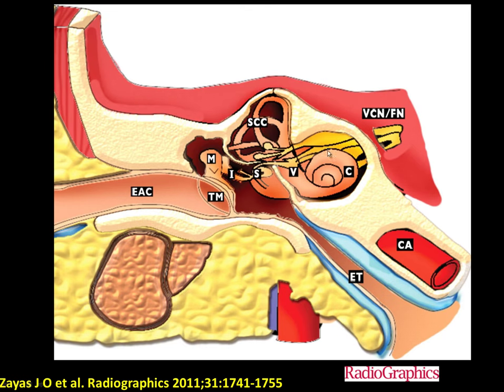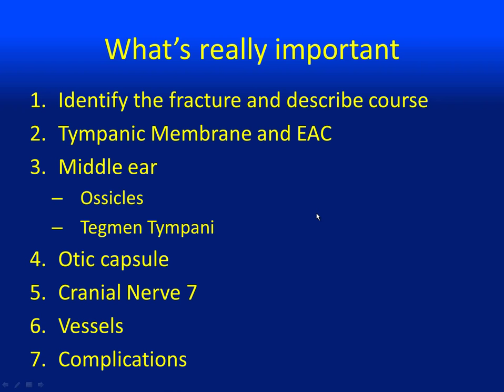In the acute setting, when a patient has a temporal bone fracture, you want to identify the fracture and describe its course. Look for the region of the tympanic membrane and importantly the external auditory canal. Look at the middle ear to identify if the ossicles are intact and if the tegmen tympani is intact — particularly important because if it's disrupted, there is now a connection between the middle ear cavity and the cranial vault. Look at the otic capsule to determine if it's fractured, check if cranial nerve 7 canal is intact, and look at vessels to see if they are involved.